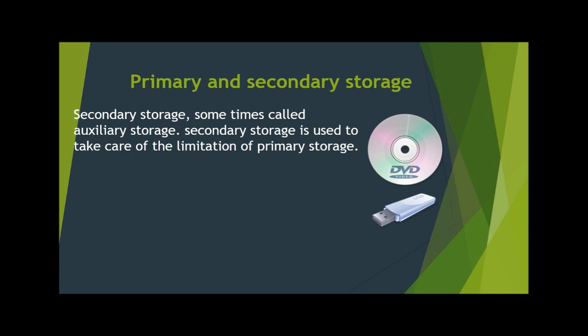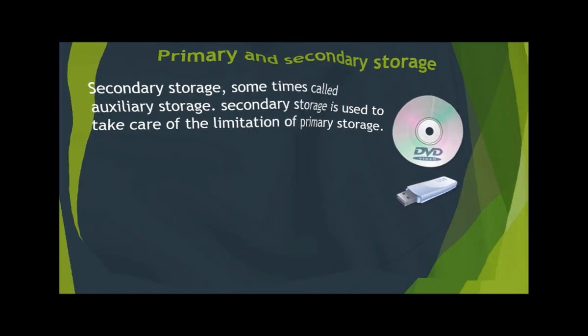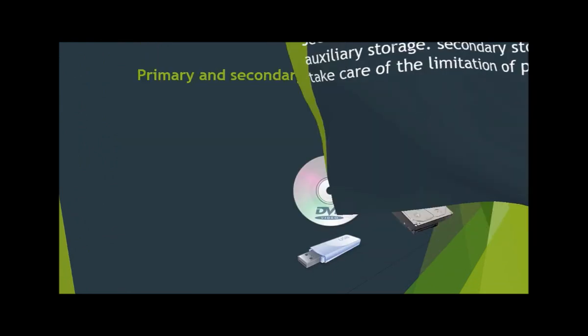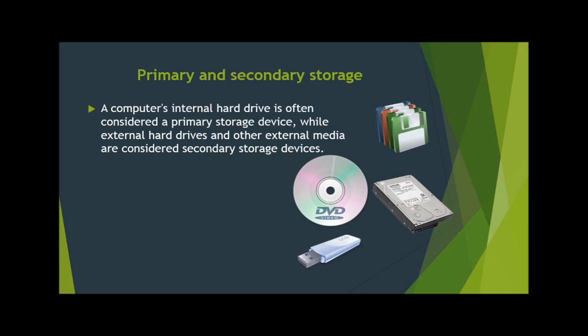A computer stores data using several different methods. Therefore, there are different levels of data storage, which may be referred to as primary and secondary storage. A computer's internal hard drive is often considered a primary storage device, while external hard drives and other external media are considered secondary storage devices.